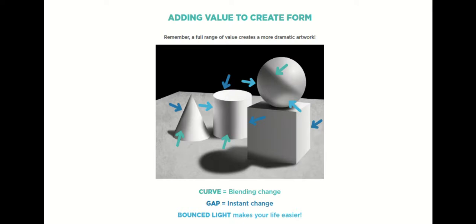When there is a gap — shown in dark blue — meaning two separate sections, you will create lights and darks instantaneously with no gradient blending. It will go from white directly to dark. The lightest blue indicates bounce light, which is essentially where your highlights are. You want to show those highlights by leaving your paper almost completely white in those areas.